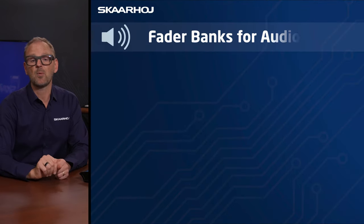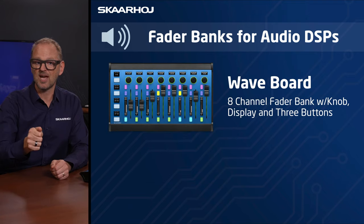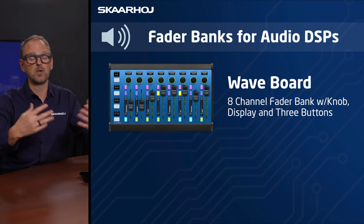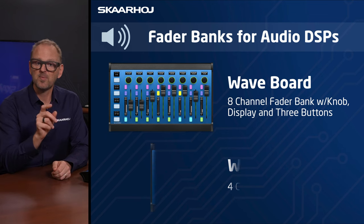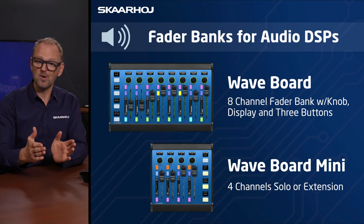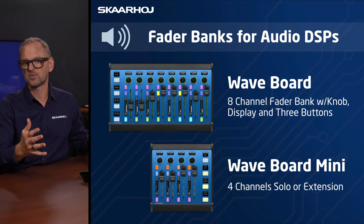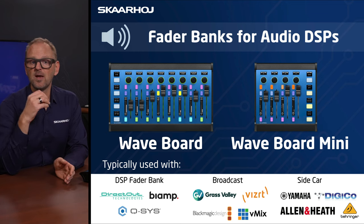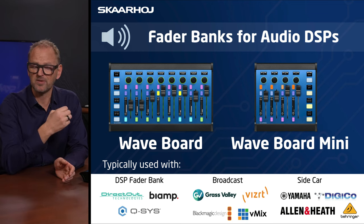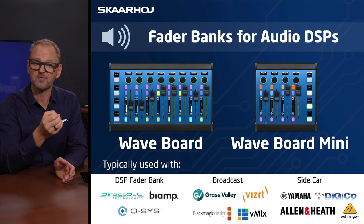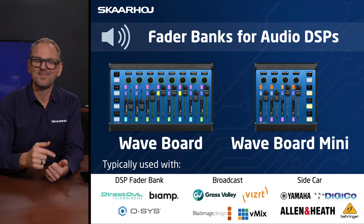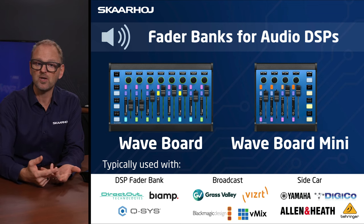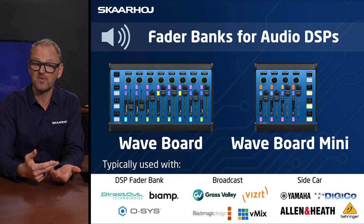For fader banks for audio DSPs, we have the Waveboard — an eight-channel fader bank with a knob and display on top, a display next to the fader, and three buttons for mute, solo, and delegation tasks. The Waveboard Mini is four channels of the same, usable solo or as an extension to make 12 channels together with auxiliary keys for paging. Compatible systems include DirectOut with Project EMB, BiAmp, Q-SYS, and on the broadcast side: Grass Valley AMP audio mixers, WizRT TriCaster audio, Blackmagic Design ATEM audio, and vMix audio.